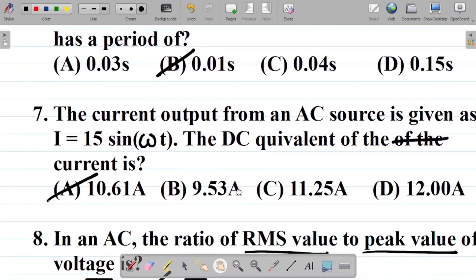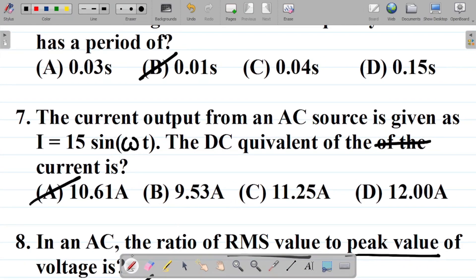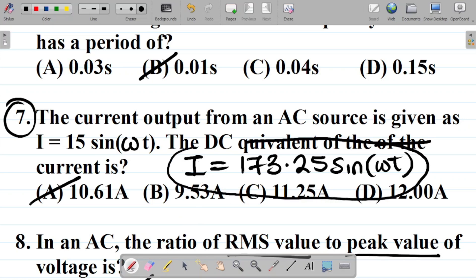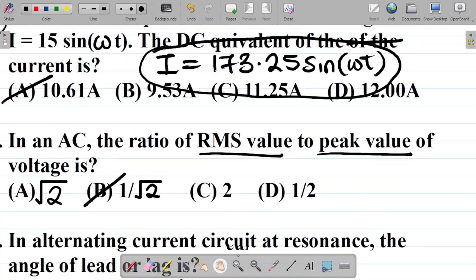That's how we answer this question. I want to leave you with a task. In question number 7, instead of 15, let's say we had I as being equal to 173.25 sine omega t. If you had this, what would be the answer of this question? The same question: the current output from an AC source is given as I equal to 173.25 sine omega t. The DC equivalent of the current is what? Leave your answer in the comment section and I will tell you if you're correct or not.